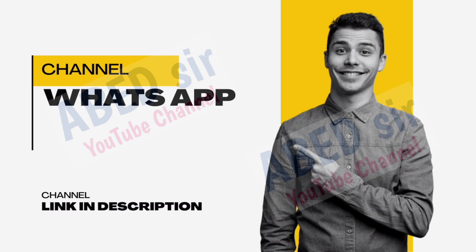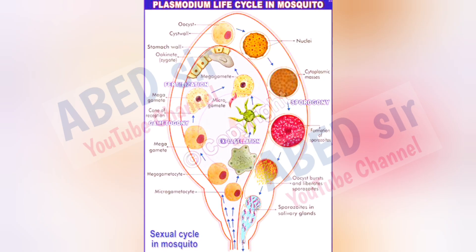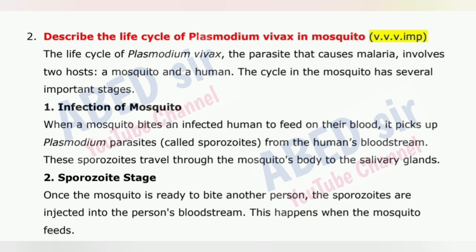Next important question is 2: Describe the life cycle of Plasmodium vivax in mosquito. The life cycle of Plasmodium vivax, the parasite that causes malaria, involves two hosts — a mosquito and a human. The cycle in the mosquito has several important stages. 1. Infection of mosquito: When a mosquito bites an infected human to feed on their blood, it picks up Plasmodium parasites, called sporozoites, from the human's bloodstream. These sporozoites travel through the mosquito's body to the salivary glands.